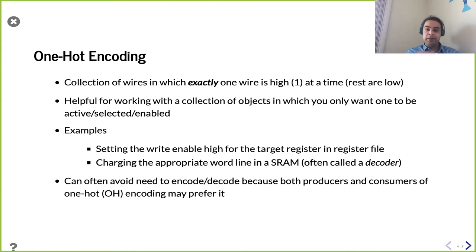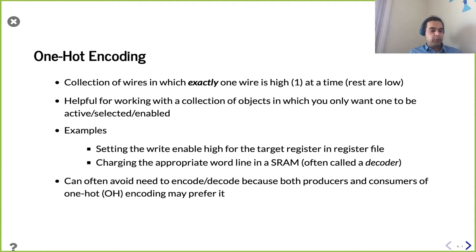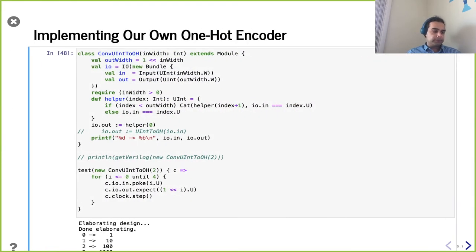Sometimes you have a number encoded and you wish it was one-hot because that'd be easier to work with. A lot of times things are originally produced one-hot and it takes additional effort to make it not one-hot. So actually, if things are produced and consumed as one-hot, don't convert it — just leave it as is. There are ways to transform it in both directions. Let's implement our own one-hot encoder.